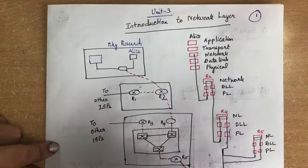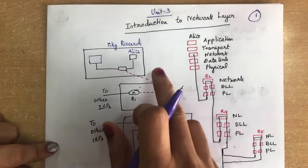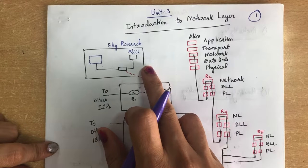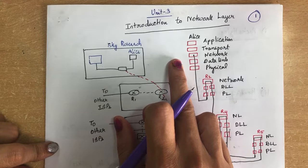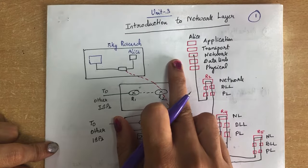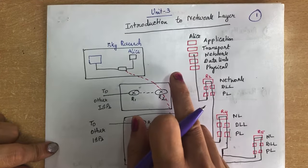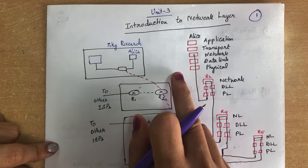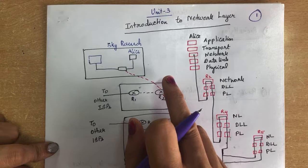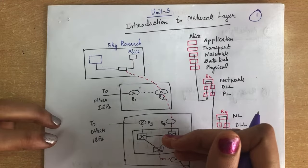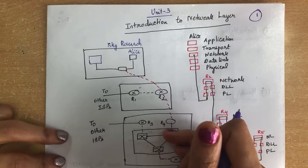Hello everyone. Today we are going to see Unit 3 of computer networks. In Unit 3 we will be dealing with the network layer. The network layer is responsible for host-to-host delivery of datagrams. It provides services to the transport layer and receives services from the data link layer.